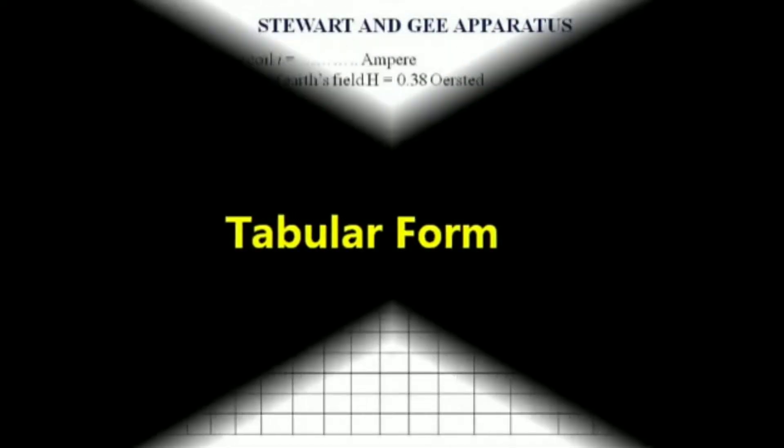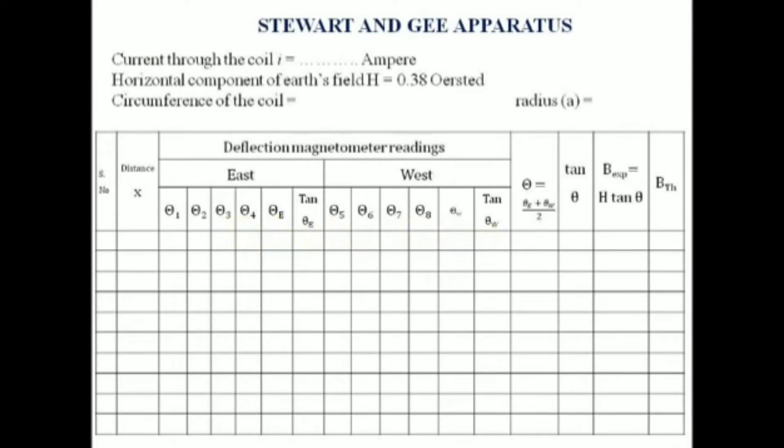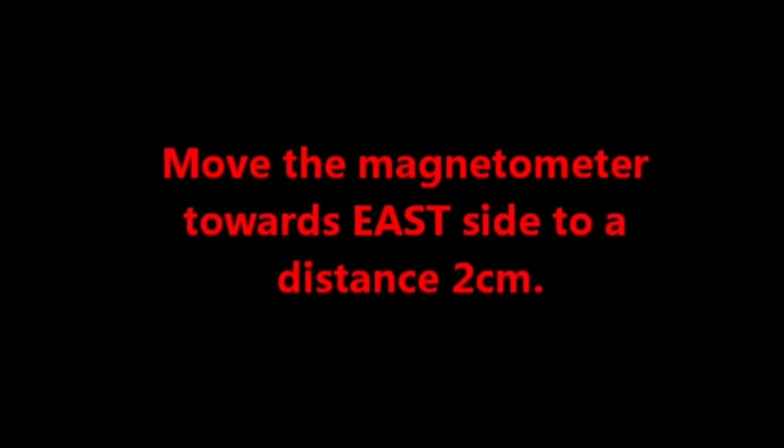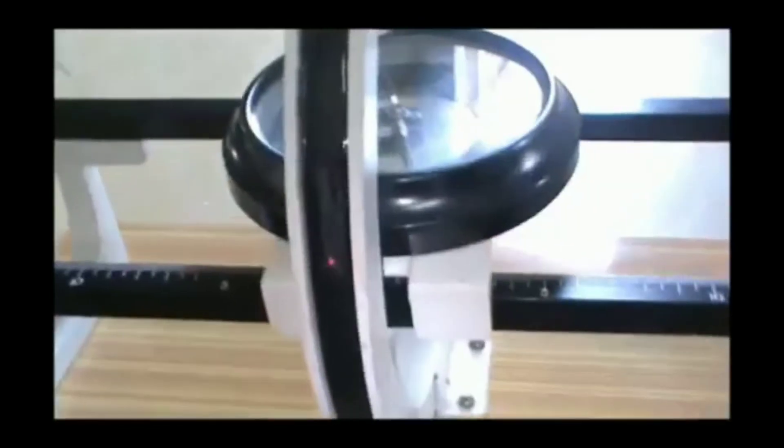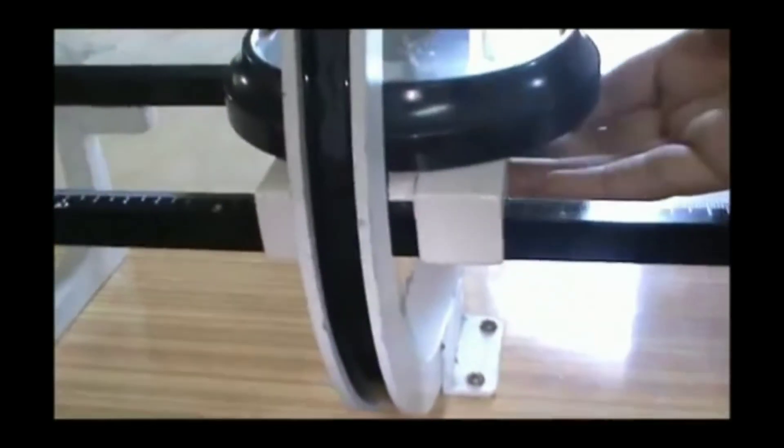In the tabular form we are seeing that distance, theta 1, theta 2, theta 3, theta 4 in east direction and west direction also. That means here we need to do this experiment in two directions. First of all we have to move the magnetic compass towards east direction, that means east side, to a distance of 2 cm from the circular coil carrying current.